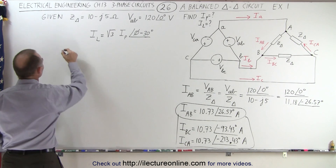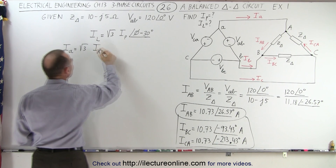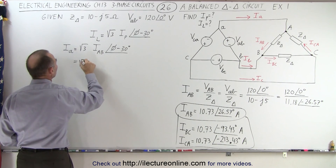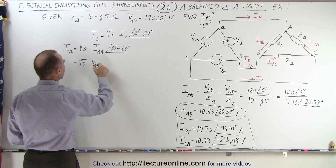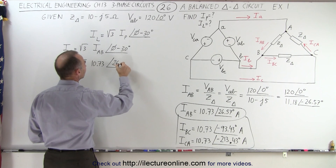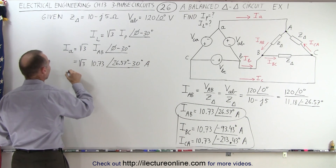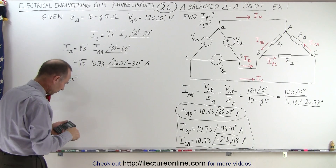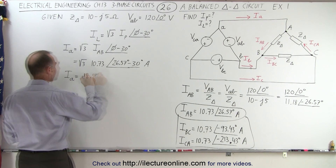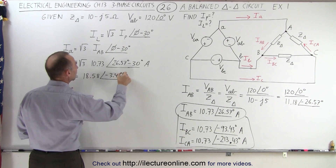That relationship means Ia is equal to the square root of three times IAB, with a phase angle of whatever IAB's angle is minus 30 degrees. So this is equal to the square root of three times 10.73, with a phase angle of 26.57 minus 30 degrees. Therefore, Ia equals 18.58 amps with a phase angle of minus 3.43 degrees.